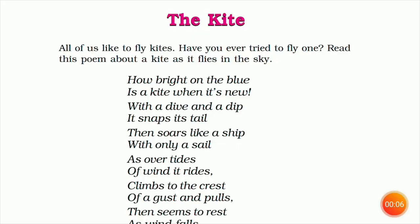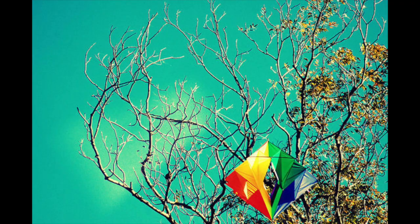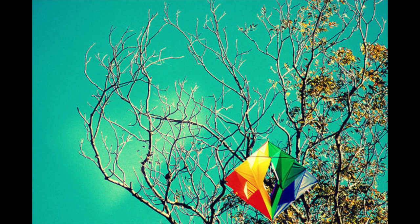The poet then repeats the opening line: 'How bright on the blue is a kite when it's new. But a regular thing you never will see, when it flaps on a string in the top of a tree.' Here again the poet repeats the starting lines, but the difference is that in the last four lines, he mentions the state of a kite when it gets stuck on a treetop and gets ragged — meaning it becomes tattered and worn out. We no longer find it appealing.